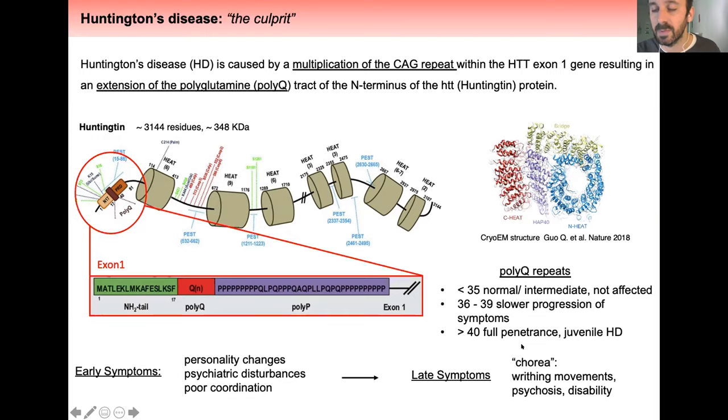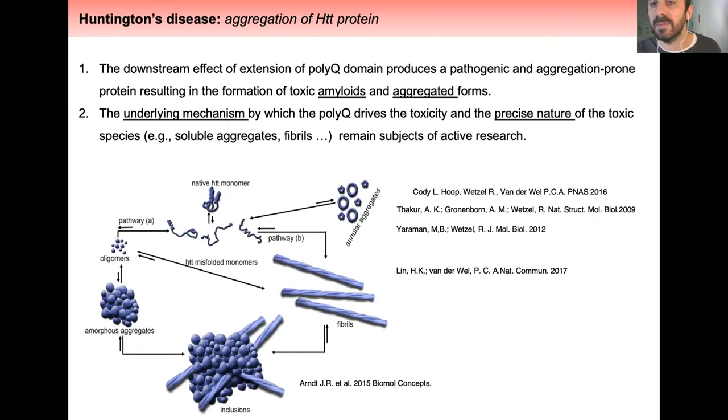The famous symptoms described 200 years ago include chorea, or uncontrolled movements. The downstream effect of this polyglutamine domain extension is the creation of pathogenic aggregation forms of the protein, leading to formation of aggregates to fibrils.